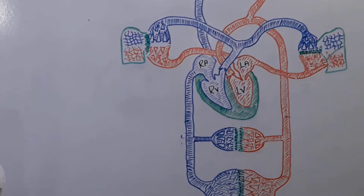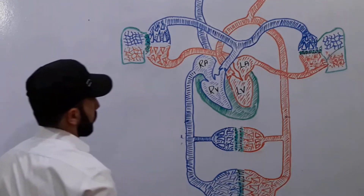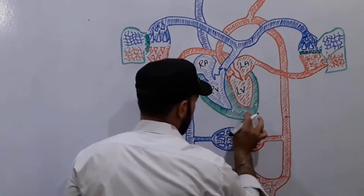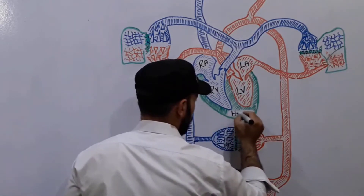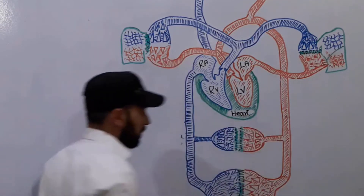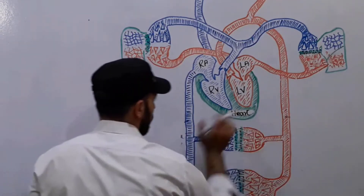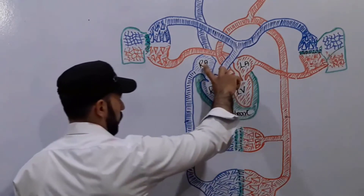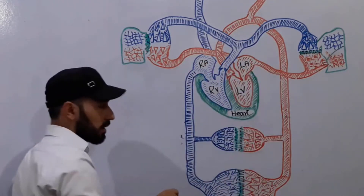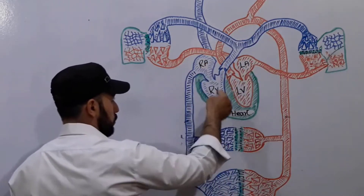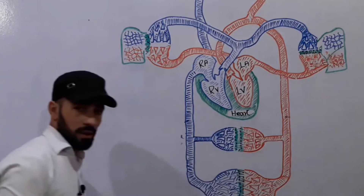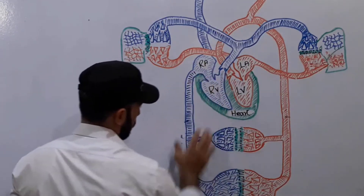As you can see, in the center of this system is a pumping organ. Let's label it — this is our heart, also known as 'cardia.' As we all know, our heart has four chambers: the two right chambers and the two left chambers. The right chambers are the upper and lower chambers, and the left chambers are also upper and lower.